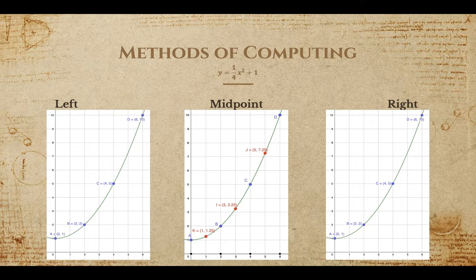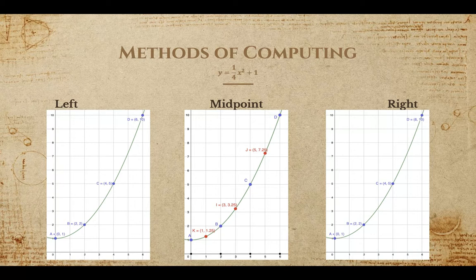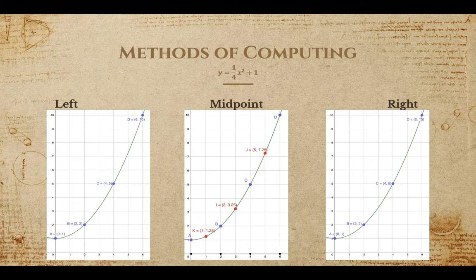Since our n value is three, and we are starting at x equals zero, we will place a point on the curve at x equals zero, two, four, and six. Left and right endpoints are marked by a, b, c, and d, and midpoints are marked by k, i, and j.